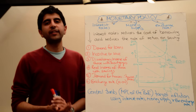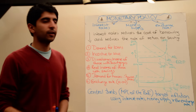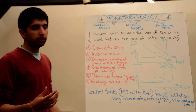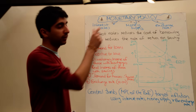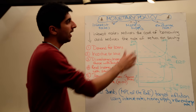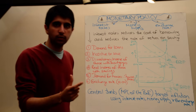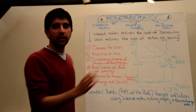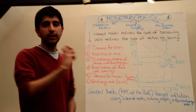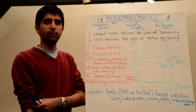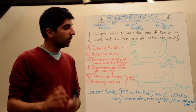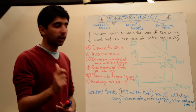Monetary policy is another type of demand side policy, which has got three branches to it. Monetary policy can involve manipulating interest rates, it can involve manipulating the money supply in the economy, and it can involve manipulating the exchange rate in the economy. All three branches you need to know and understand, but especially interest rates — interest rates is the big daddy of monetary policy. It also has got an aggregate supply link.